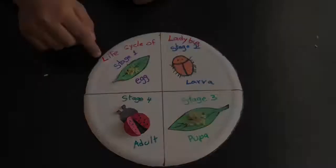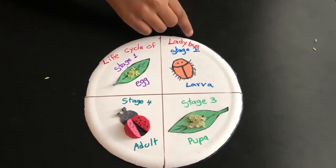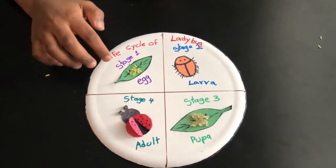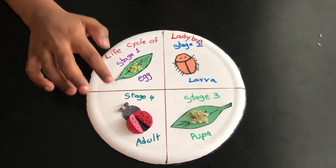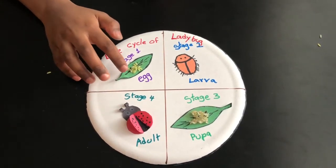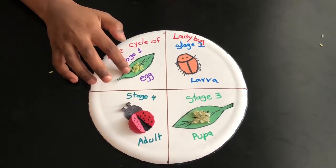Life Cycle of Ladybug. Stage 1: An adult ladybug lays eggs on a leaf.